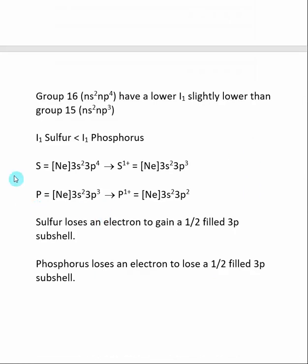Here, sulfur in its neutral state has an electron configuration of neon 3S2 3P4, and when it loses an electron to become positively charged, it has an electron configuration that contains 3P3.